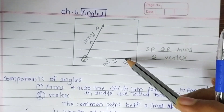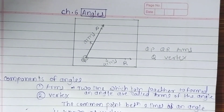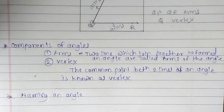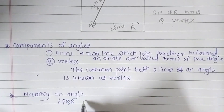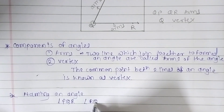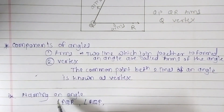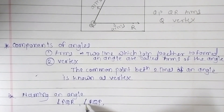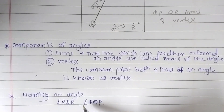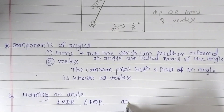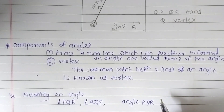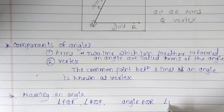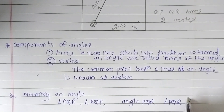Or we can say angle RQP. We also use a symbol for angle instead of writing out the full word. This is the sign of angle. In short, we can use the angle symbol to write angle PQR like this. This is the symbol of an angle.